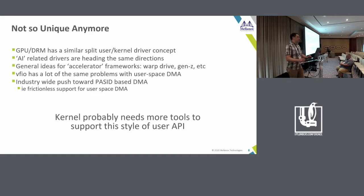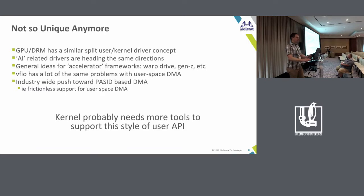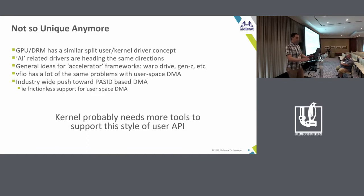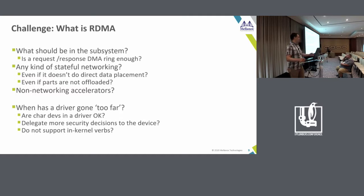Someone was posting about making an accelerator framework to bundle these together. VFIO is doing a lot of the same stuff. The IOMMU/PCI track was talking about PASID for doing DMA to user space. Overall we're getting better, but we still have a big lack of real kernel support for this kind of subsystem — there are a lot of things that subsystems needing these features do kind of hackity-hack, and we've run into trouble.